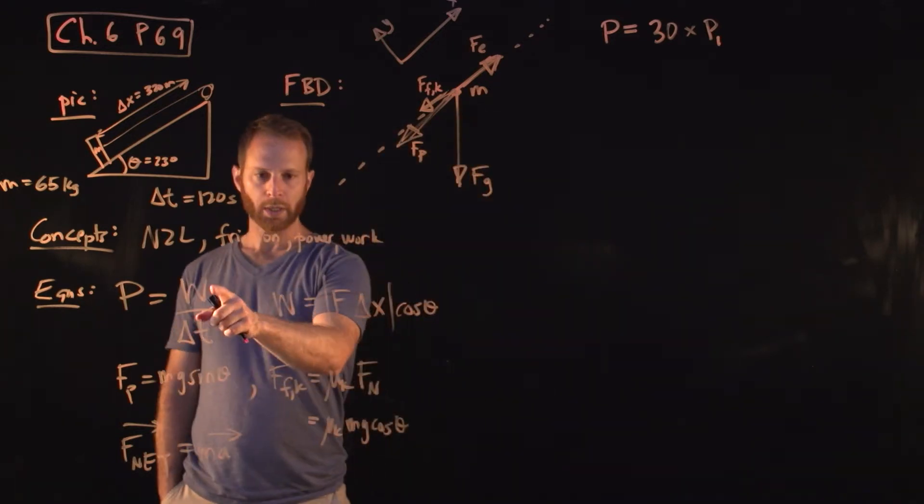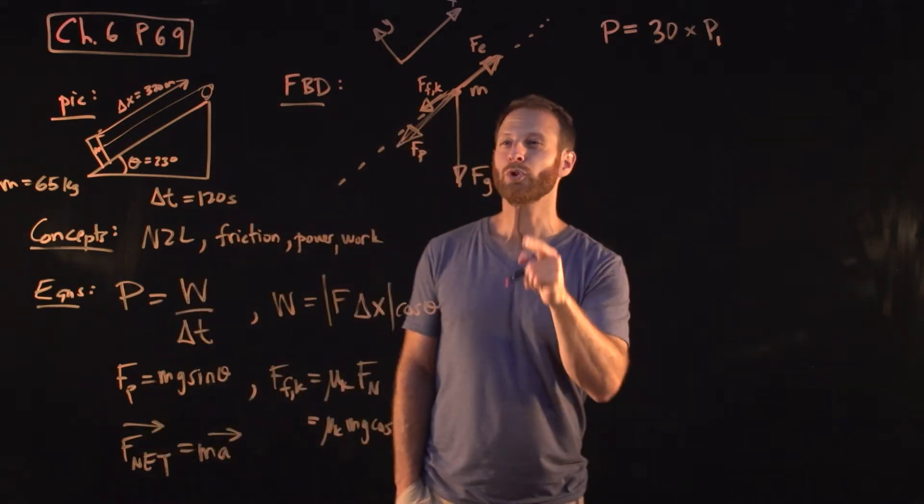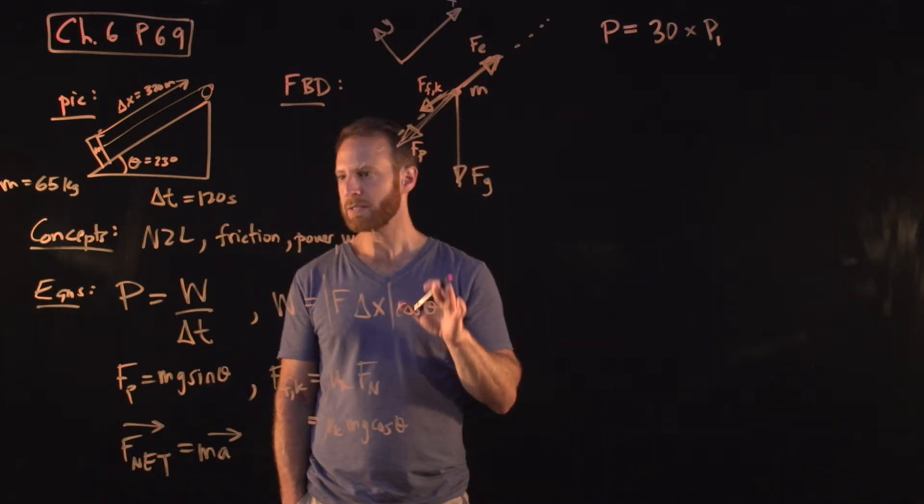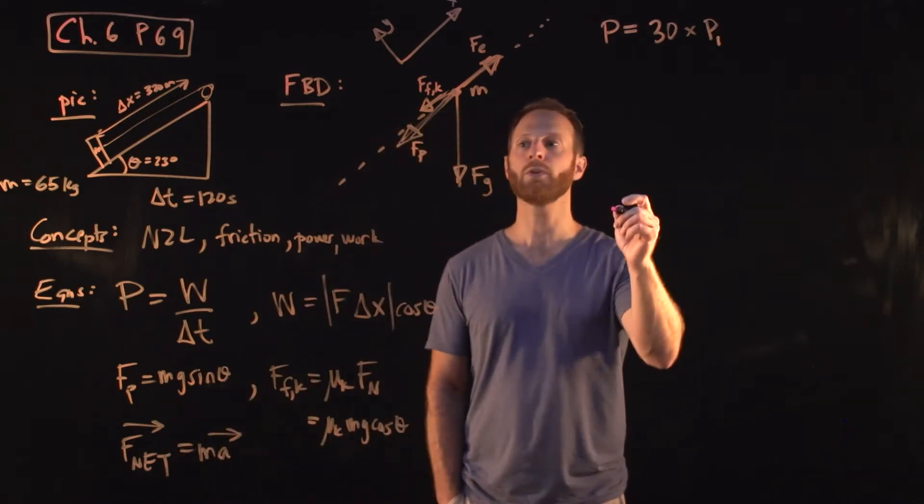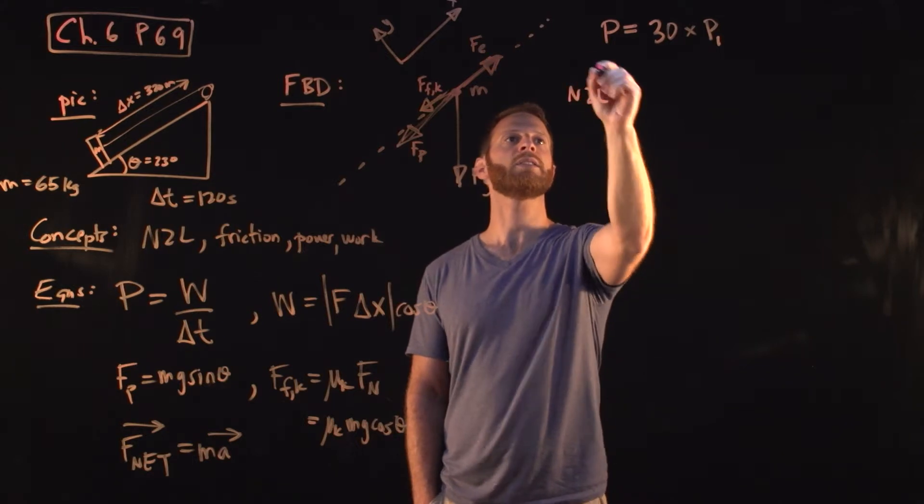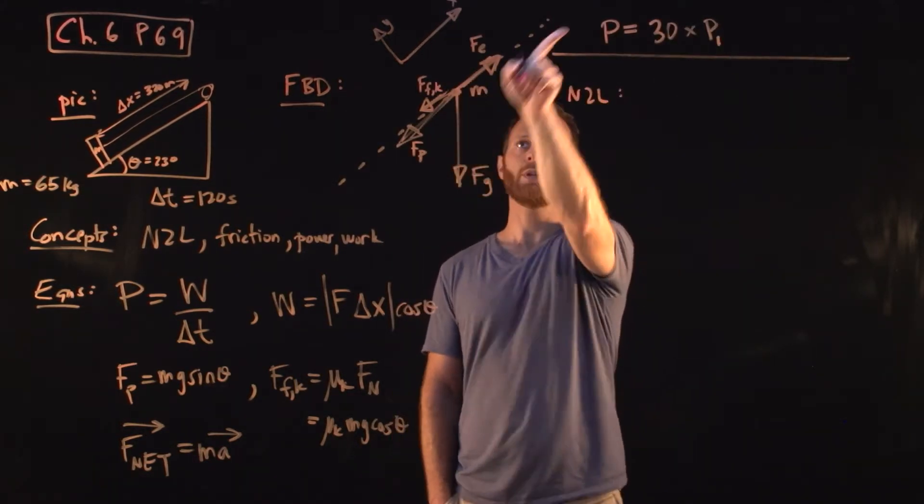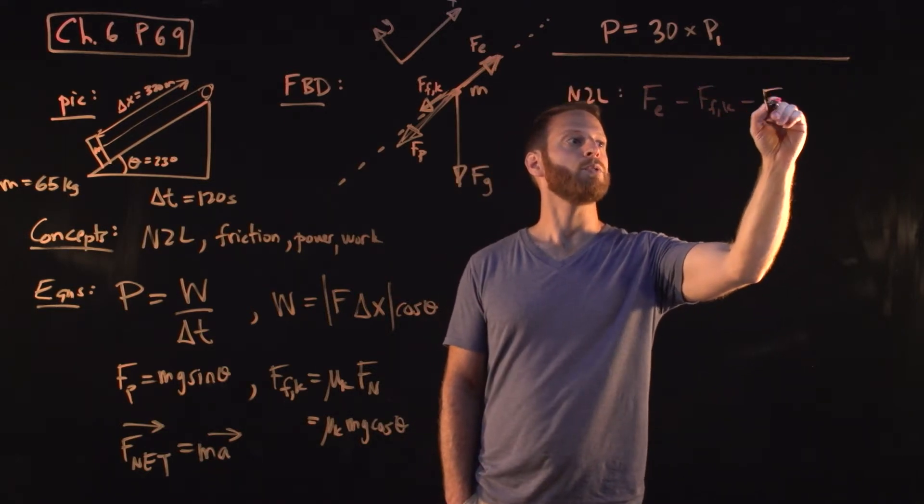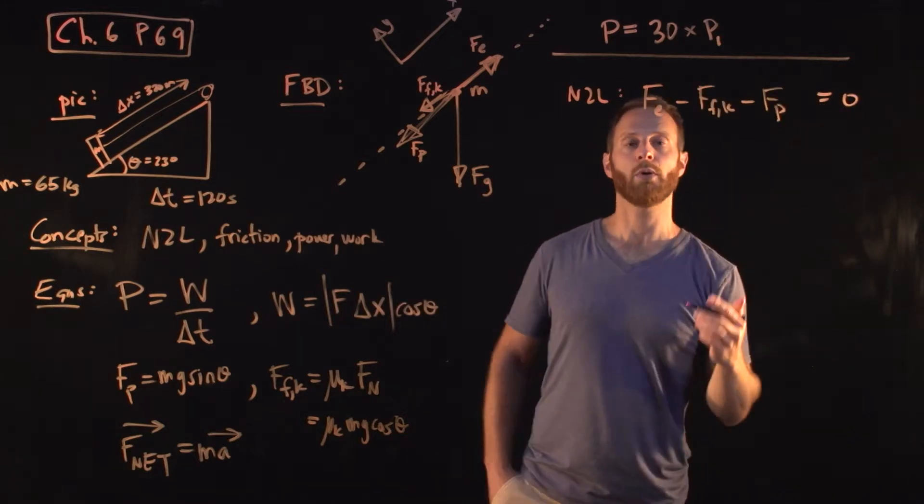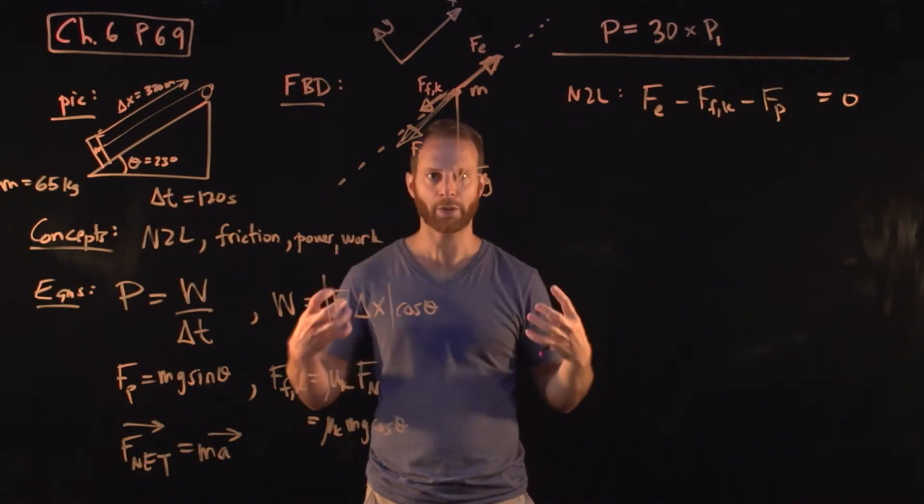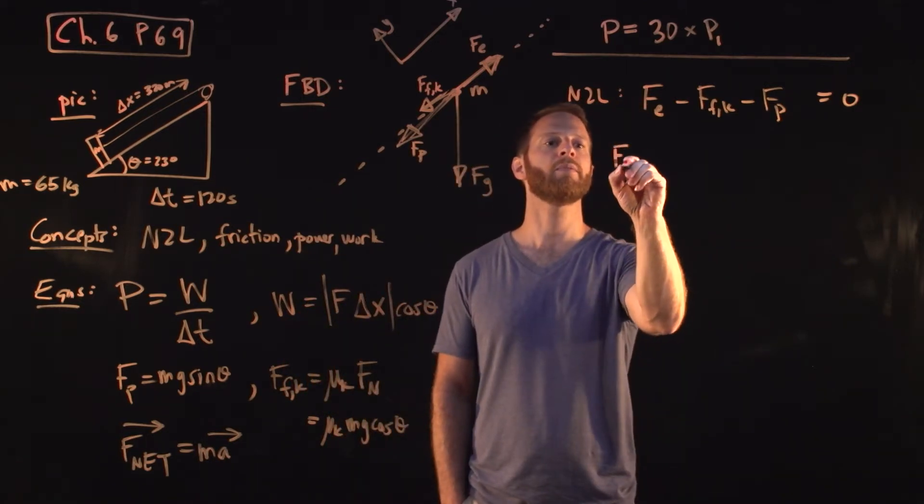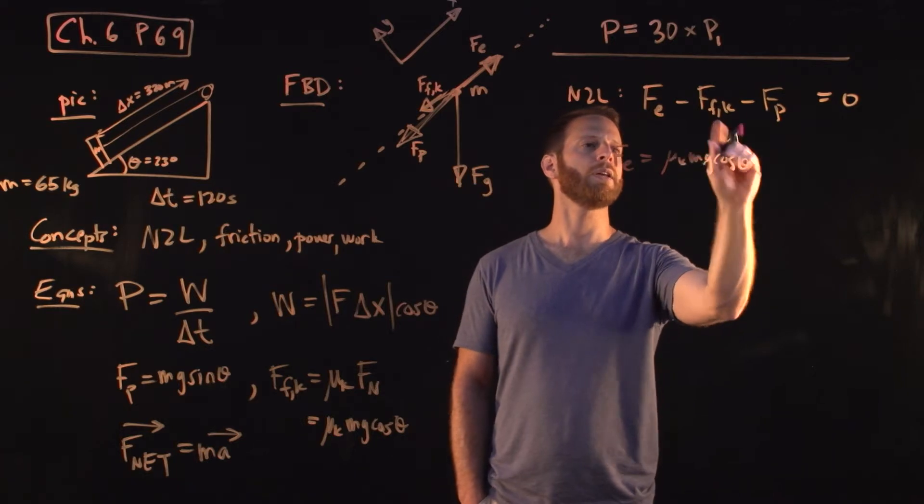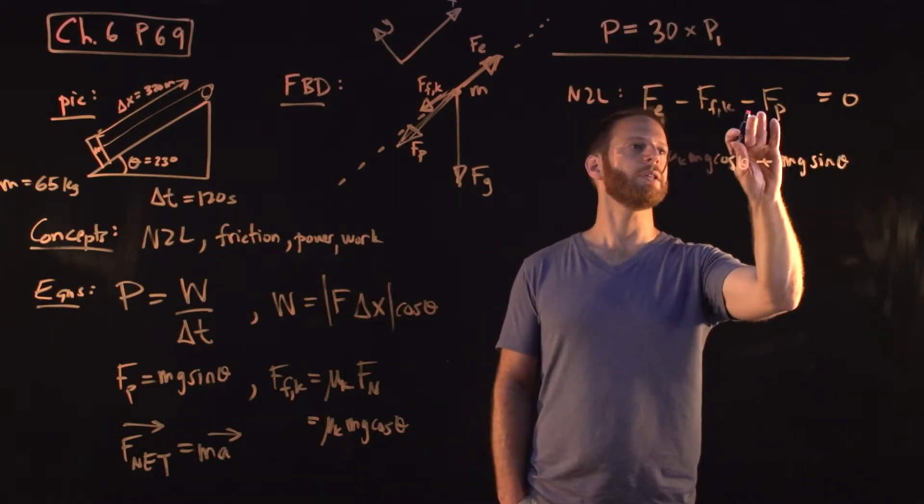First of all, to get power we're going to need work. To get work we need to know how much force is required. If you start from the free body diagram and think about what Newton's law says, because it's going up the ramp at constant speed, it's not accelerating. If it's not accelerating that means the net force is zero, so if we think about this being the x direction, Newton's second law tells us that the force going up, the force provided by the engine, minus the force of friction, minus the force of gravity, the parallel component, those are equal to zero. What we want really is the force provided by the engine, because we're going to try to get the work and power provided by the engine. That just means that the force provided by the engine is equal to these things added together. In other words, let's write it like this, mu k mg cosine theta, that's this term on the other side, plus mg sine theta, that's this term on the other side.